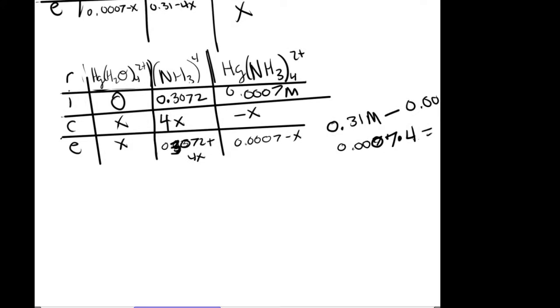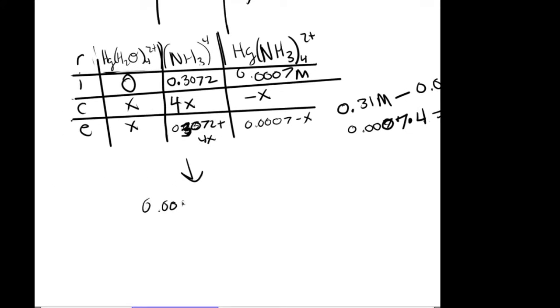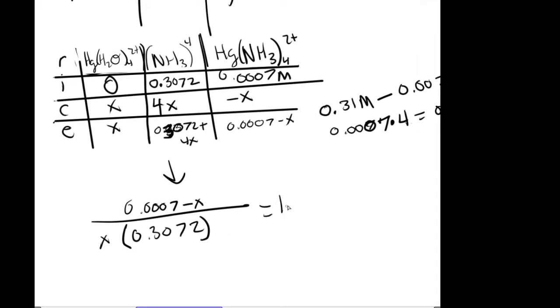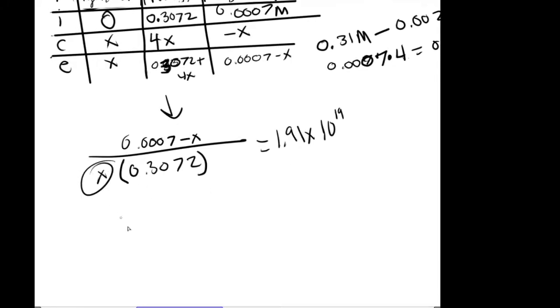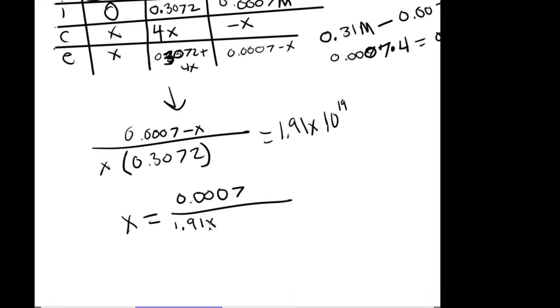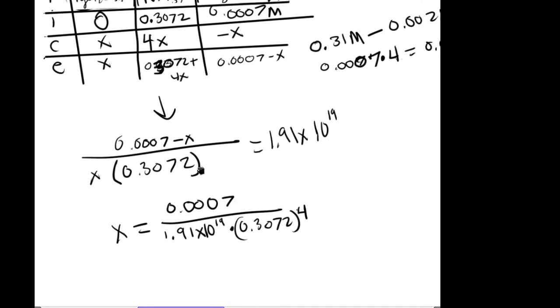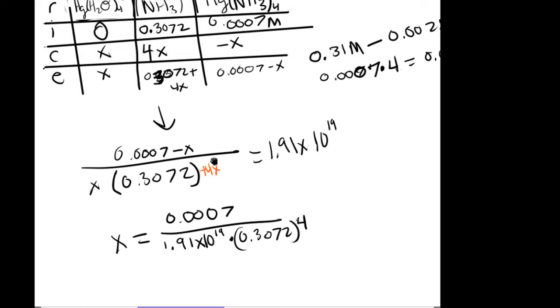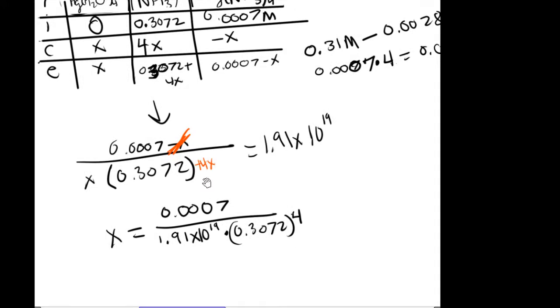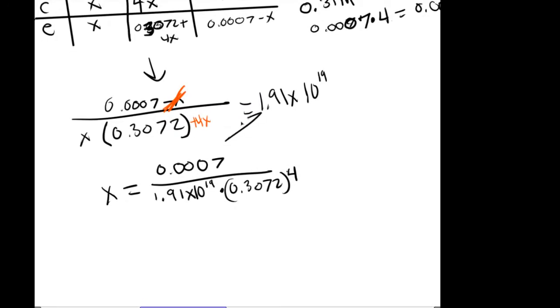And then you make that new equation. So 0.0007 minus X over X times 0.3072 equals the KF, which is 1.91 times 10 to the 19th. And then you would rearrange it so that you can get the value of X. So X equals 0.0007 divided by 1.91 times 10 to the 19th times 0.3072 to the power of 4. And the reason why I left out the X's, like the plus 4 X and the, cross that out, is because I have no idea. It just says to do that. And I'm guessing it's because this number is so large.